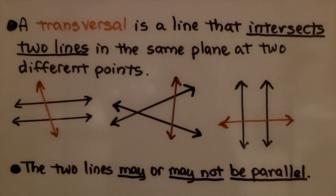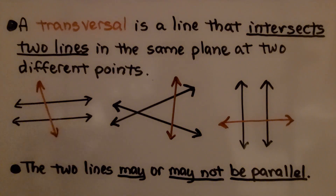As we learned in the previous video, a transversal is a line that intersects two lines in the same plane at two different points, and the two lines may or may not be parallel.